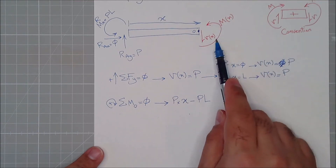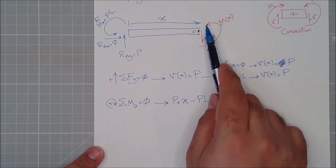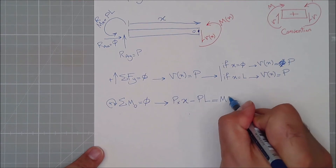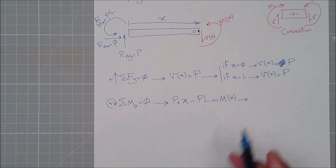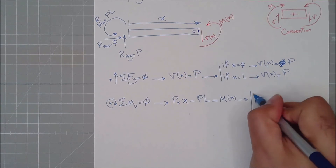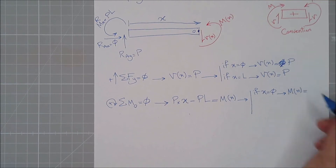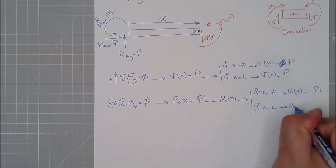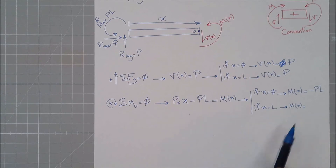There is also M(x) at the cut, which acts against the assumed positive direction, so it enters as negative M(x). Setting the equation equal to zero and solving: M(x) = Px − PL. Evaluating: if x equals zero, M(x) equals negative PL. If x equals L, M(x) equals PL minus PL, which equals zero.